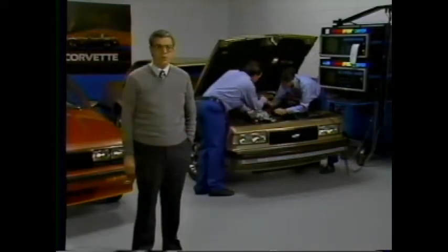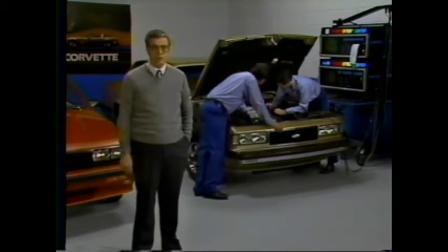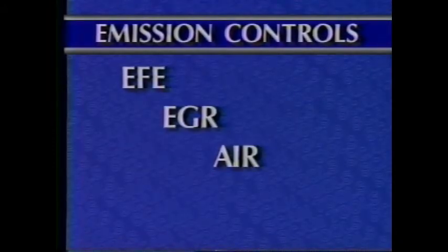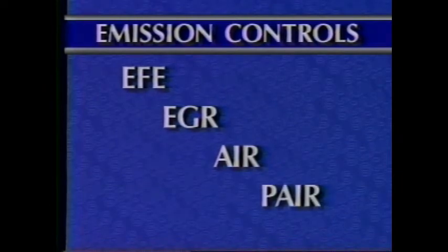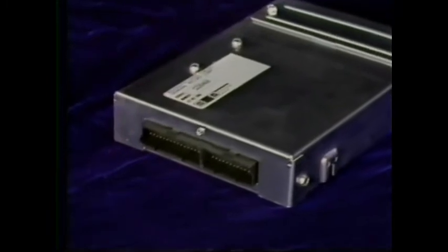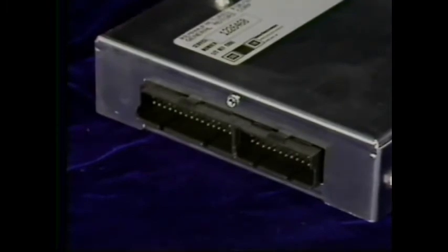Let's begin by taking a brief look at the history of driveability. When emission controls were introduced in the early 1960s, most driveability problems could be corrected with a turn of this or a twist of that. As time wore on, many additional types of emission controls were needed, such as EFE, EGR, AIR, and PAIR — and the list kept growing. Driveability diagnosis was quickly becoming a black art.